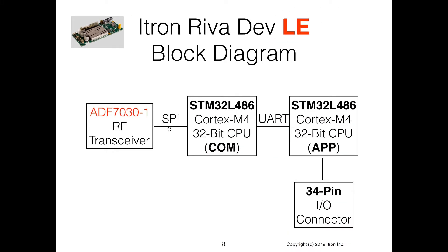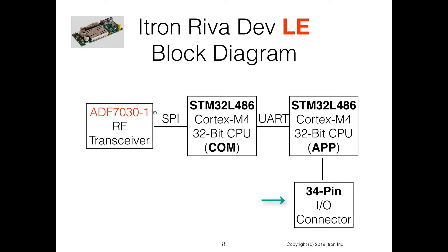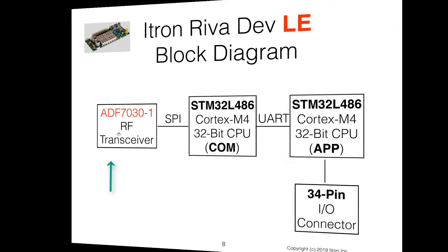Here's a block diagram of that particular board. When you go through this course and take on Embedded C projects, they often begin like this — where you'll look at the type of processor you're using. Here I have a microprocessor, the STM32L486. This is a communications processor, here's an applications processor, here's IO pins, and here's a radio transceiver.